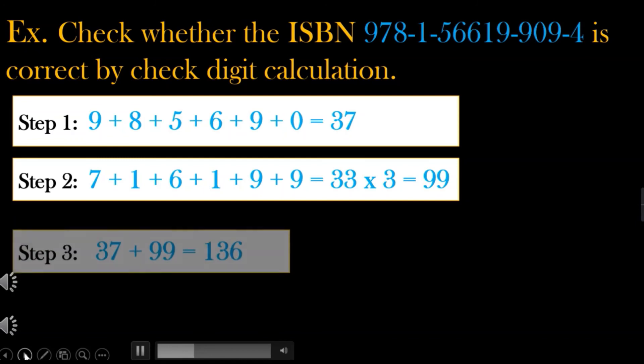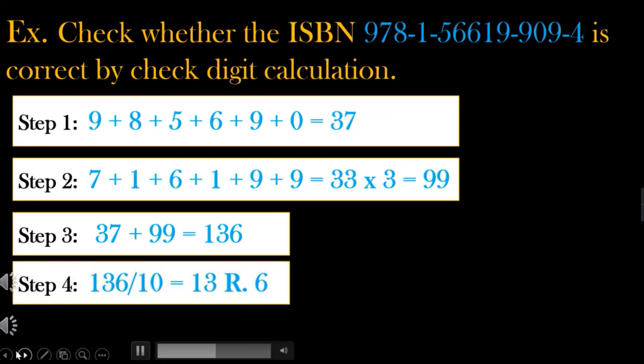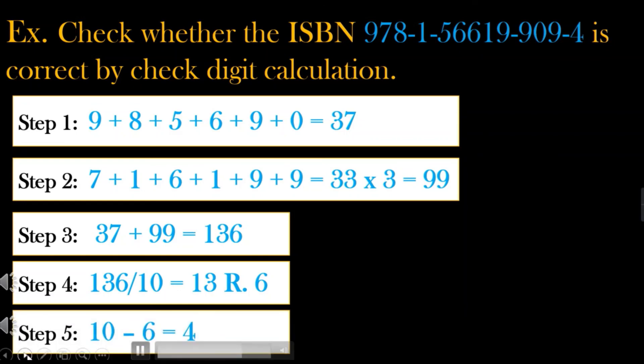Step 3: Add the results of step 1 and step 2. 37 plus 99 is equal to 136. Step 4: We divide the result by 10 and get the remainder. 136 divided by 10, we get 13 with a remainder of 6. Subtracting the remainder 6 from 10, the result is 4. Thus, the check digit is 4. Checking the given ISBN number, the 13th digit which serves as the check digit is 4. Therefore, the ISBN is correct.